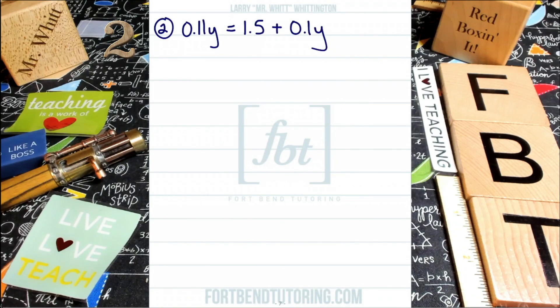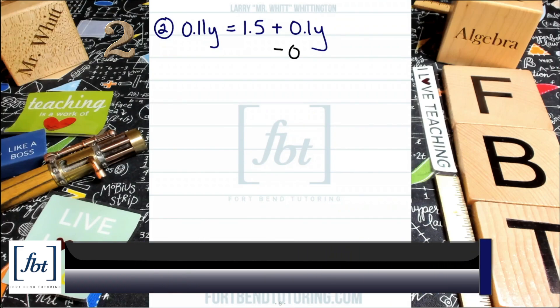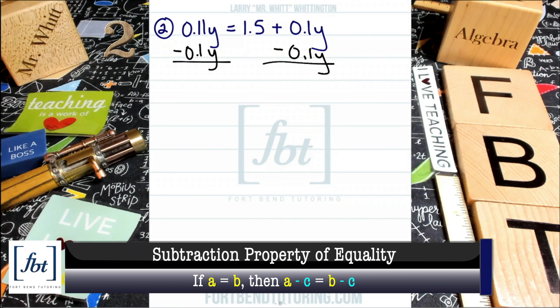So here in problem number two, we have the 0.11Y equals 1.5 plus 0.1Y. Well, once again, let's go ahead and see what happens with both methods. Alright. The first method is just to attack the problem like we normally would. Well, for the first method, I would want to get all of the terms with the variable Y on one side of the equation. So I'll be subtracting 0.1Y to both sides of the equation here. That's what I'm going to do.